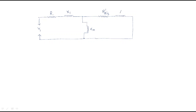Regarding the currents: the stator current is I1, the no-load branch current is I0, and the rotor circuit current is I2 dash. To understand this, assume the stator branch as Z1, the rotor branch as Z2, and the magnetizing branch as Z3. The current flowing through XM is I_mu.